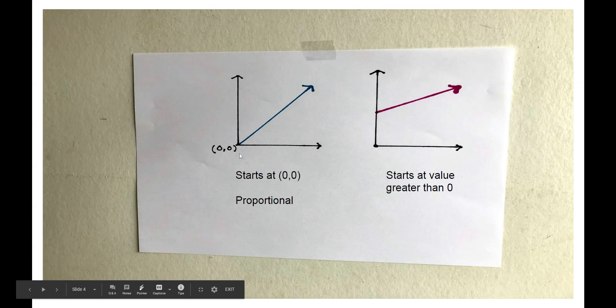The first graph has an initial value or starts at 0,0. Since it has the point 0,0, it is also a proportional relationship. The second graph starts at a value greater than 0.